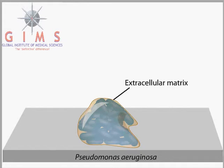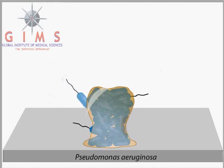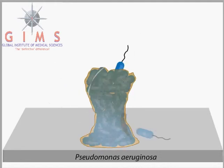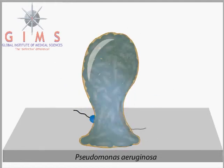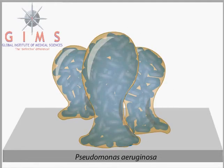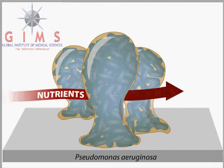Quorum sensing serves the biofilm in many ways, such as by increasing the resistance of biofilms to antibiotics. Quorum sensing in Pseudomonas aeruginosa plays a role in the maturation of the biofilm into complex three-dimensional forms, such as columns and streamers, forming channels through which nutrients flow.